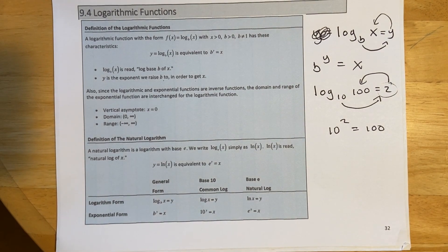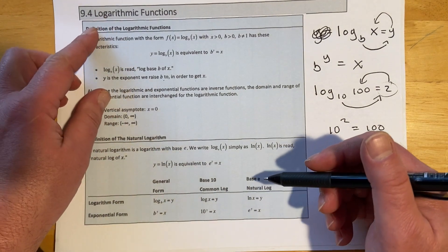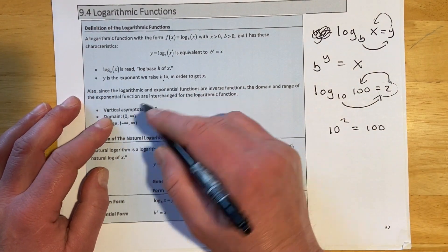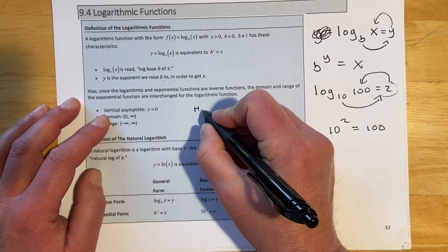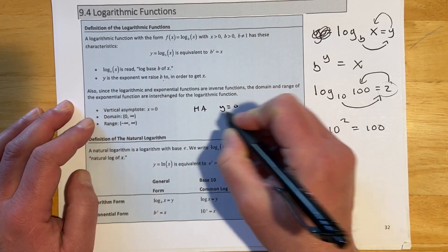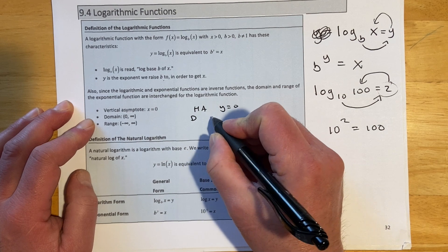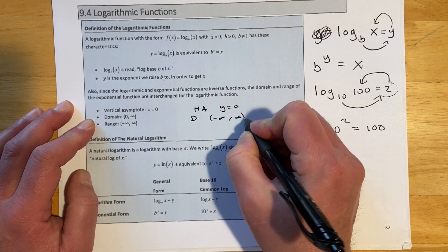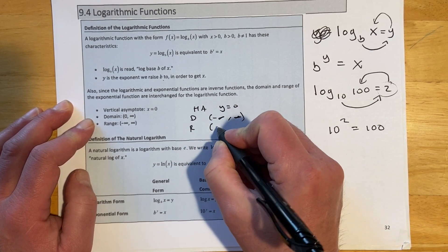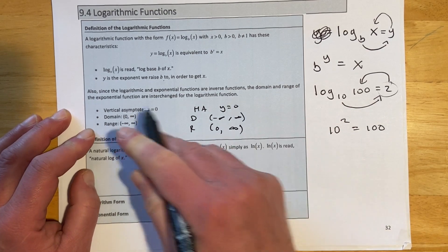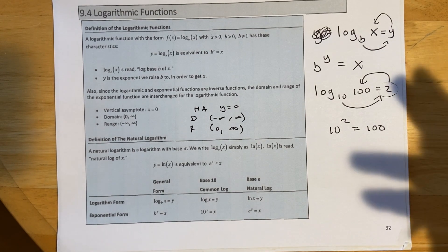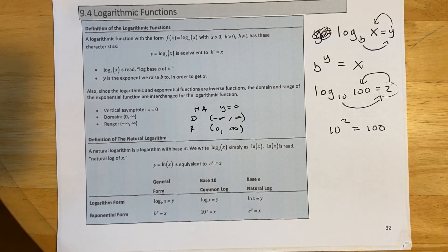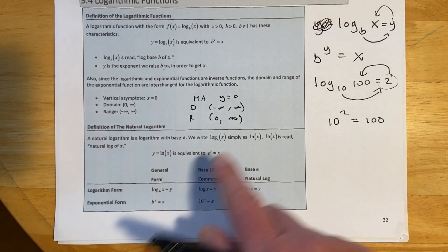This is the inverse of an exponential, which is why inverse functions are in this chapter. If you look back at exponentials, they had a horizontal asymptote at y = 0, a domain of negative infinity to infinity, and a range of 0 to infinity. Everything is exactly backwards between logs and exponentials because of that inverse relationship.